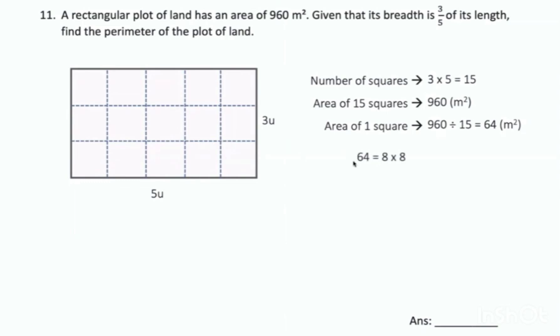So 64 is 8 times 8. Meaning the size of one small square is 8. Right?